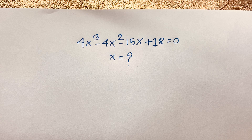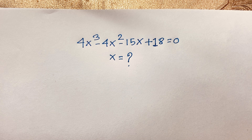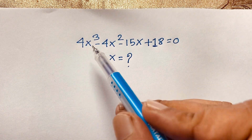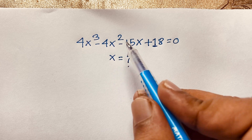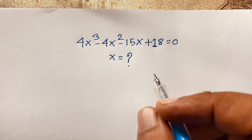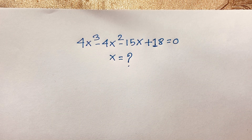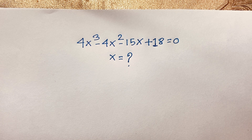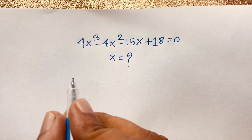Hello everyone. In this video we solve an interesting math question: 4x cubed minus 4x squared minus 15x plus 18 equals 0. Someone requested this question, so I solved it using 3 methods. The third method is especially interesting, so please don't skip the video.